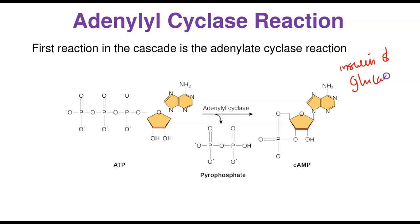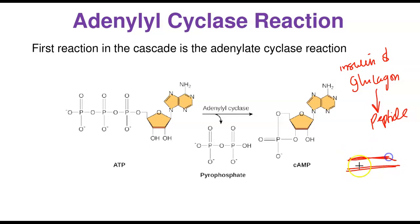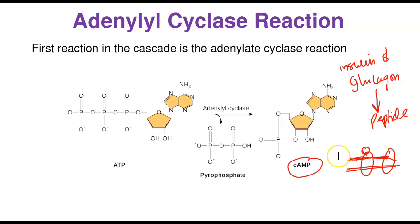Insulin and glucagon are peptide hormones — peptide meaning protein. For peptide hormones to exert their effects, when they bind to receptors on the cell membrane, they trigger a cascade of activity. One key part of what they do is trigger the synthesis of cyclic AMP (cAMP), also called cyclic adenosine monophosphate.